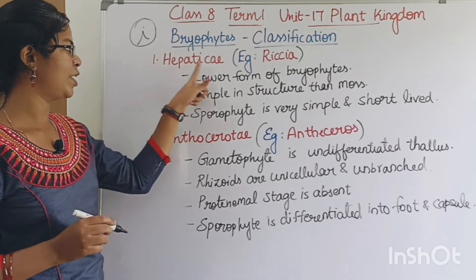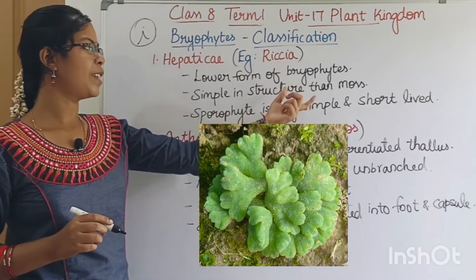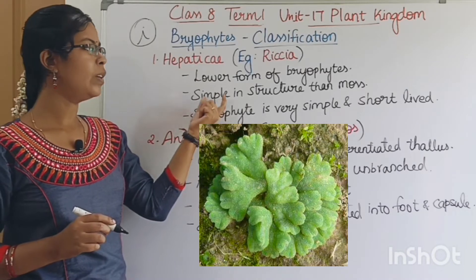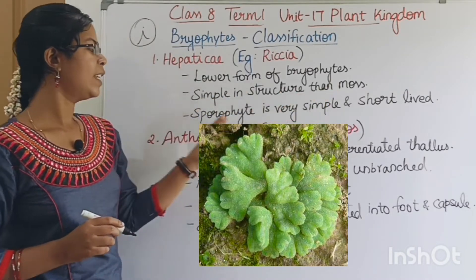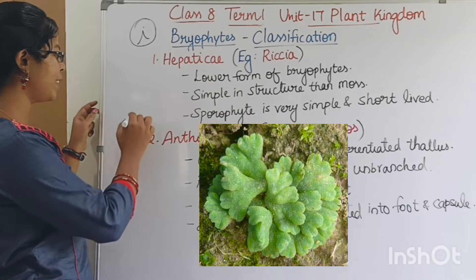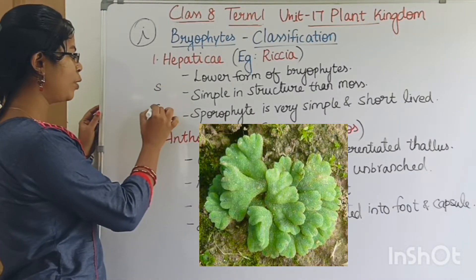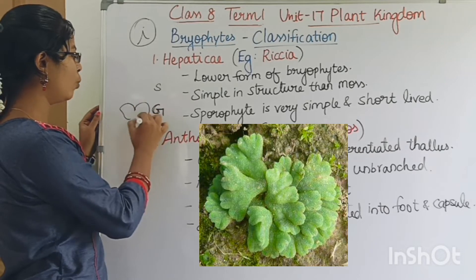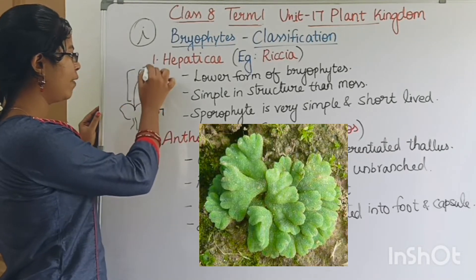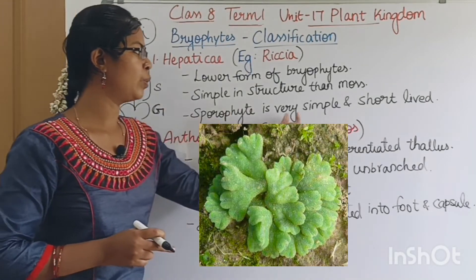The first class is Hepaticae. The example is Marchantia. This is Bryophytes in lower form. This structure is simpler than the moss. The sporophyte is very simple, the gametophyte is very simple. Gametophyte is not leaf-like, but root-like.